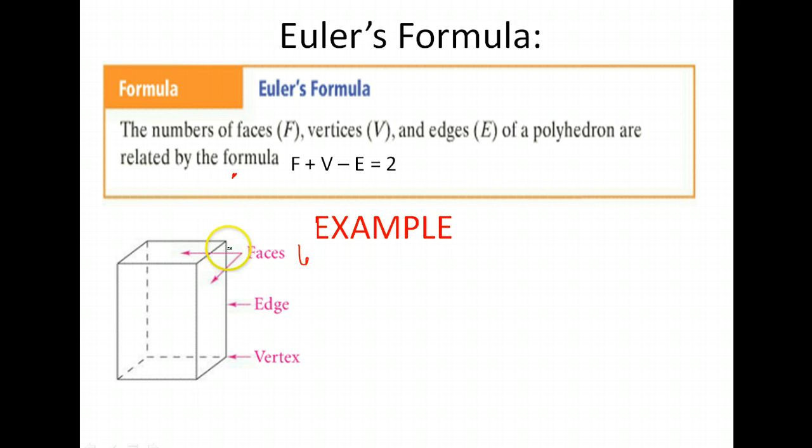Now let's count the number of edges. So again, edges are the lines. So here's one, two, three, four. These are all of our vertical lines. Five, six, seven, and eight. And then on the bottom, nine, ten, eleven, and twelve. There are twelve edges.